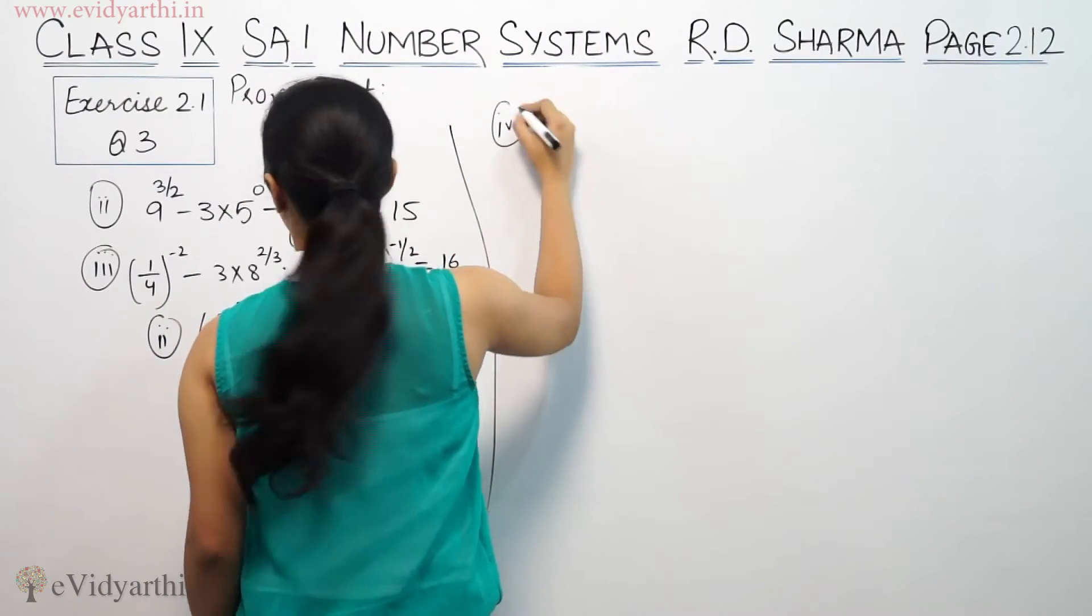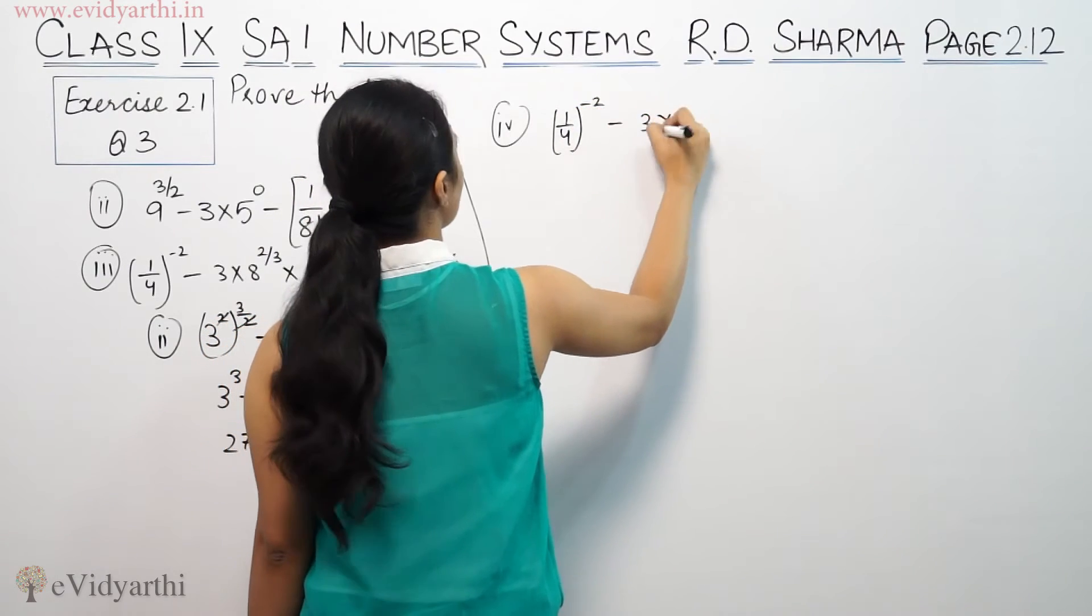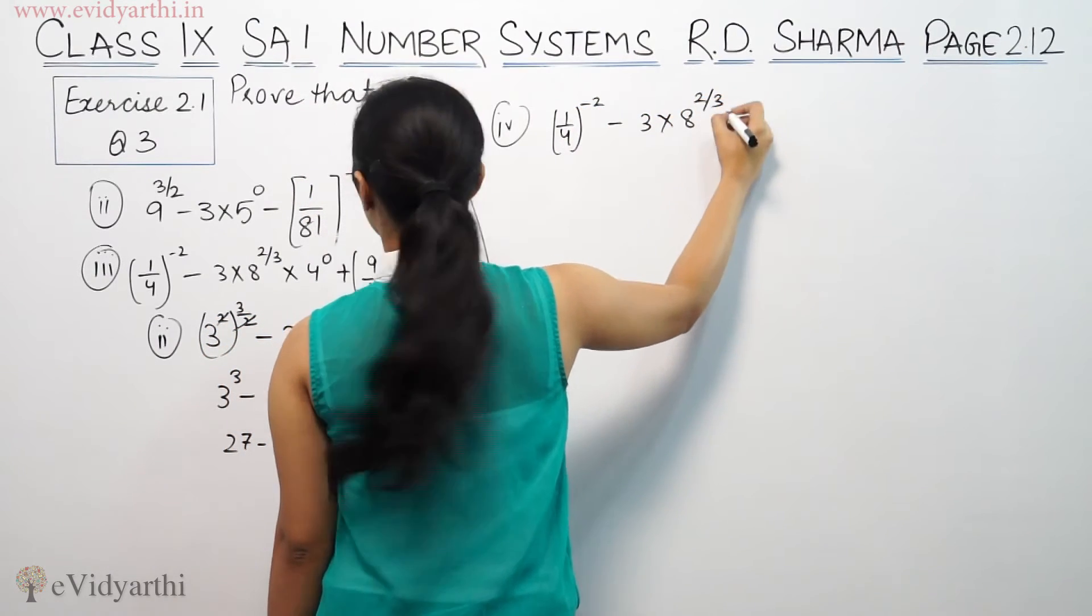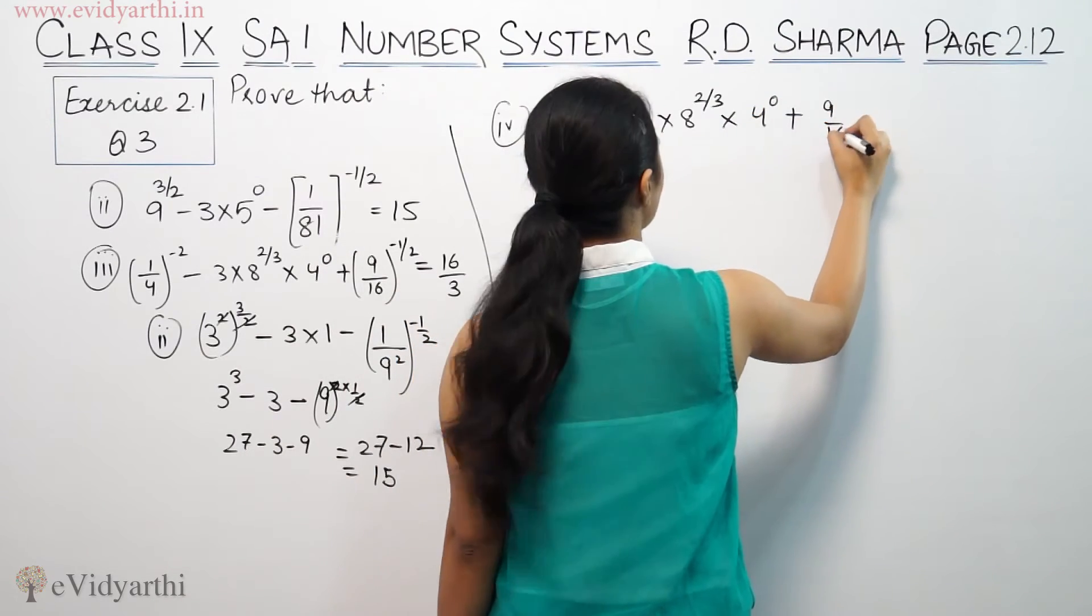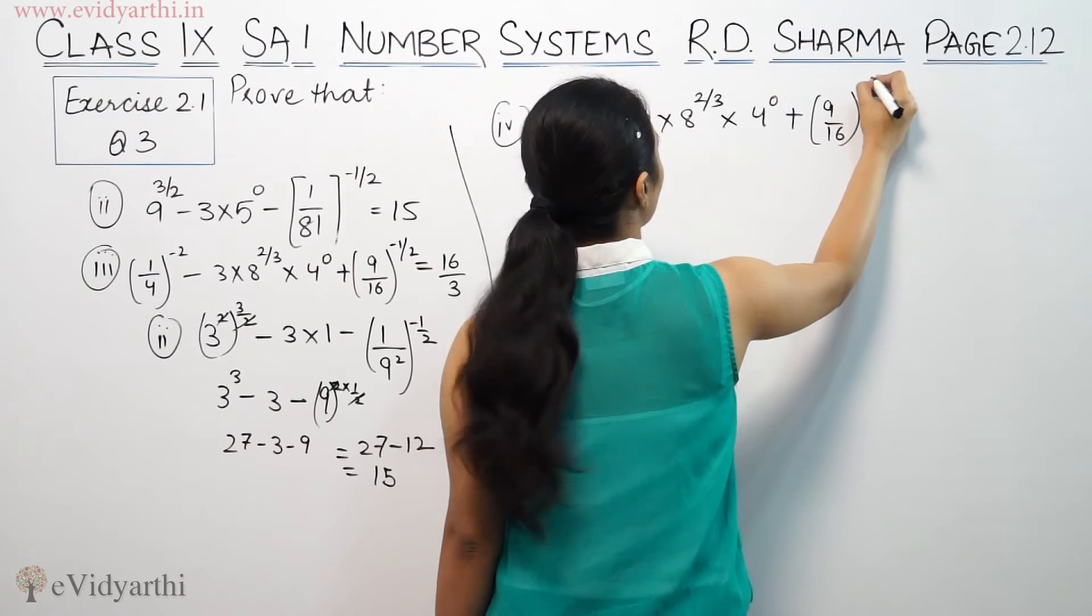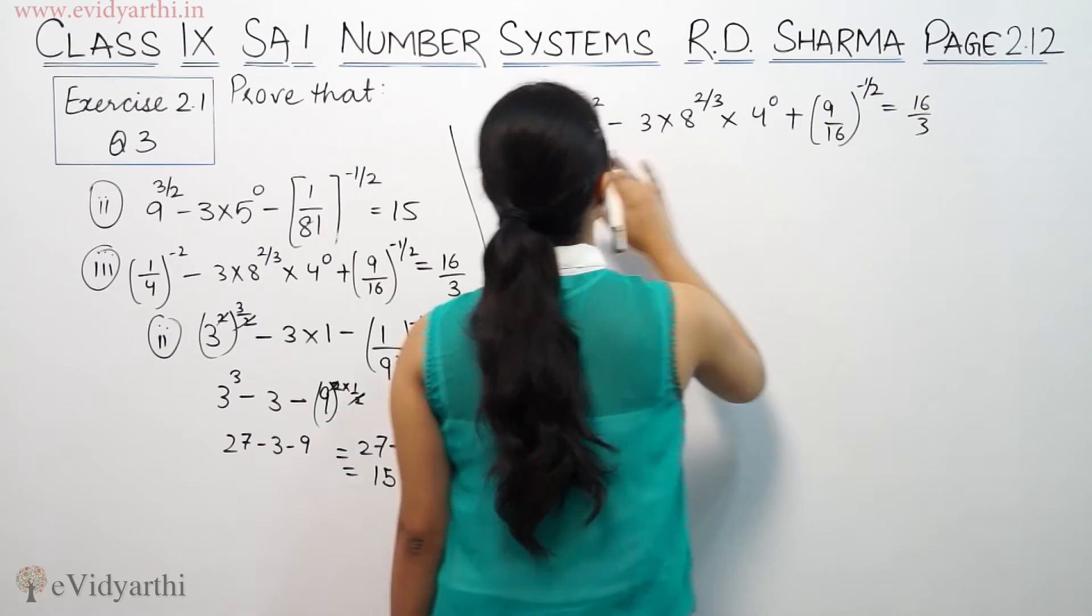Part 4. 1/4 raised to the power minus 2, minus 3 into 8 to the power 2/3 into 4 to the power 0, plus 9/16 to the power minus 1/2 equals 15/3.